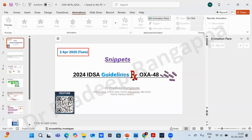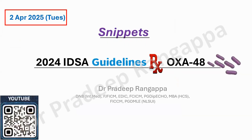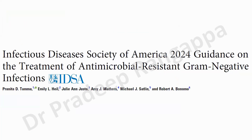As part of this snippets series, I'll cover all CRE resistance organisms. I've finished KPC, NDM, and CRAB. Today, in about two minutes, we'll cover OXA-48 and what the IDSA guideline — which came out in 2024 — suggests. I request all of you to go through it once.